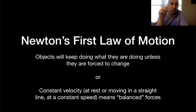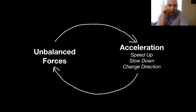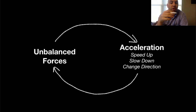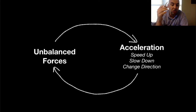Things moving at a constant velocity means they have balanced forces acting on them. Along those same lines, we have what are called unbalanced forces. Whenever we have unbalanced forces, that means we're going to have what's called acceleration — things are going to speed up, slow down, or change direction. And if you ever see acceleration, that means we have unbalanced forces at play.